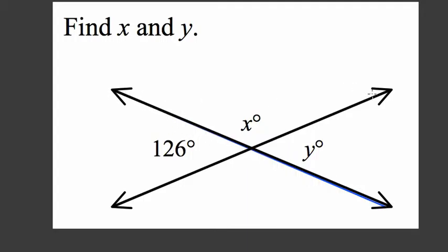one, two intersecting lines, which give us the vertical angles here and here. These two are vertical angles, 126 and y, which means they're equal to each other.